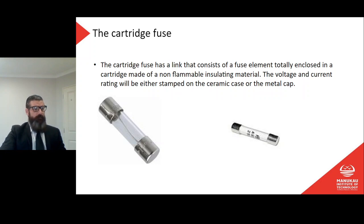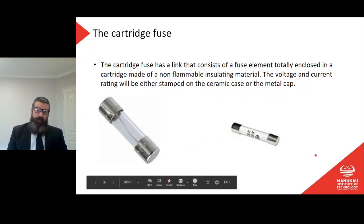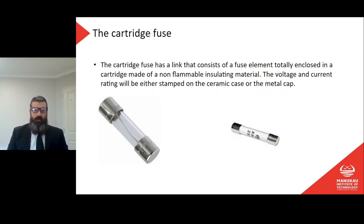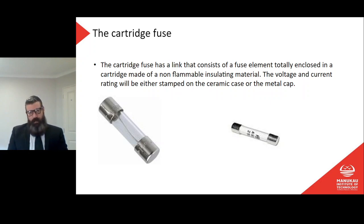Moving on to the cartridge fuse. The cartridge fuse has a link that consists of a fuse element totally enclosed in a cartridge made of non-flammable insulating material. Voltage and current rating will either be stamped on the ceramic case or the metal cap. These types are typically used inside appliances or electronic circuit boards — fairly compact, typically 25 millimeters long or smaller. They're generally identified by size: 25 millimeter, 20 millimeter, and so on.